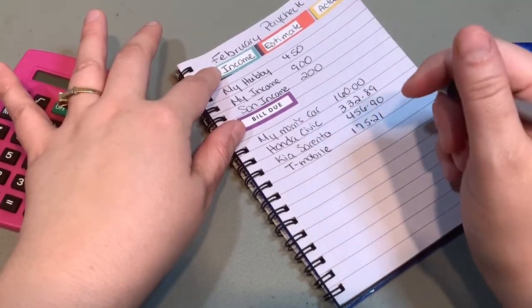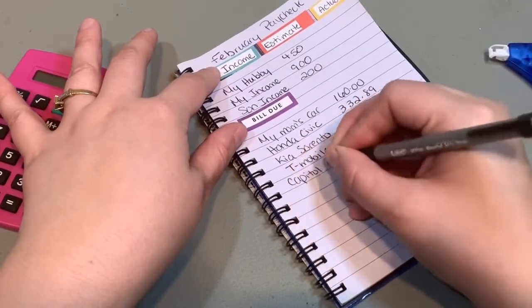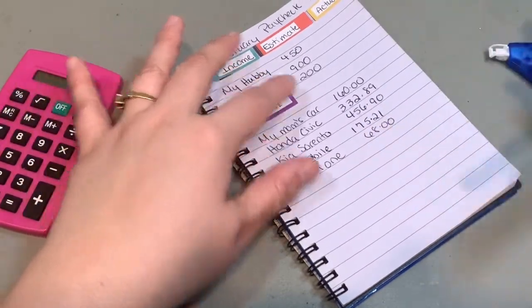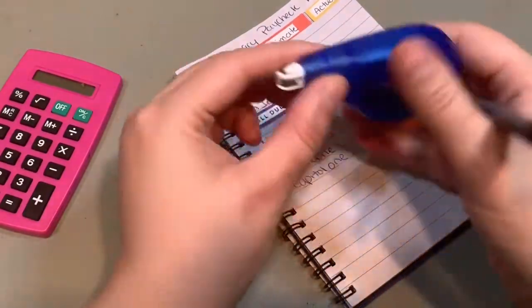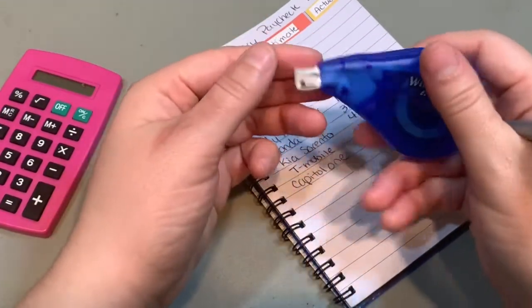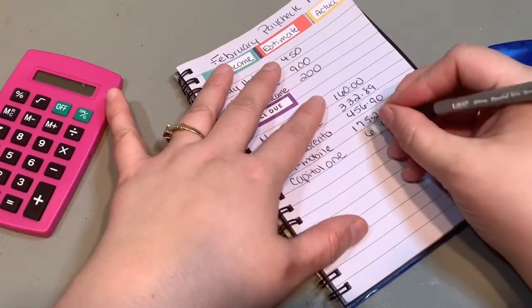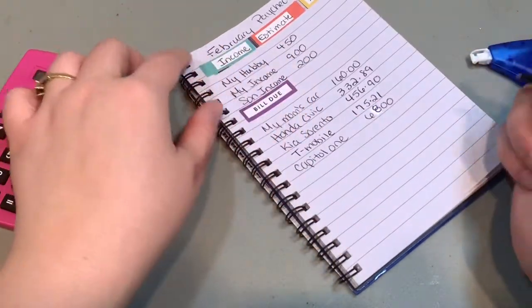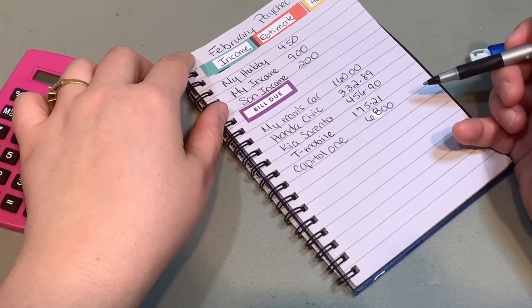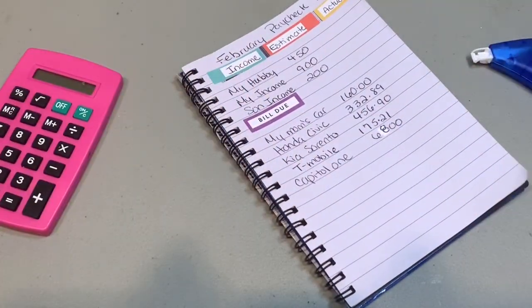Okay and then let's see I also have my husband in Capital One and that is $68. I don't like how I did that eight. What is wrong with this thing? Okay so $68. And then let's see for, so I got the 160, 68, 175.21. Okay so I have everything there that's for the bills that are due.